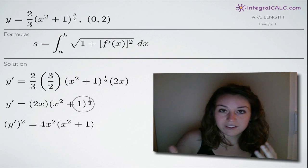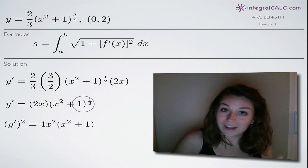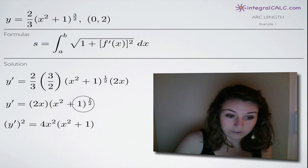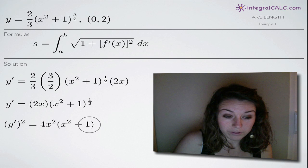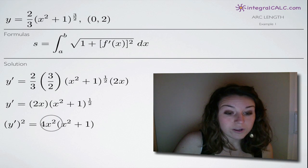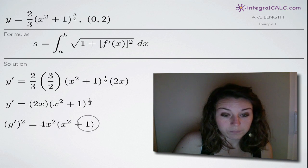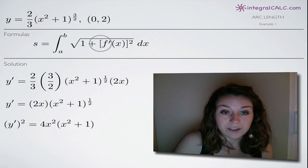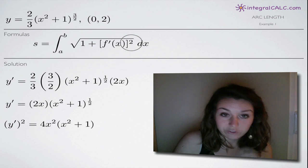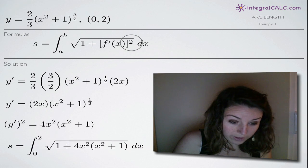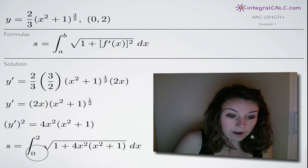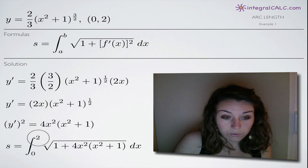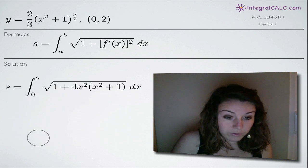So when we square it, the 2x squared, or sorry, 2x becomes 4x squared. And this x squared plus one to the one half, remember that anything raised to the one half is the square root of that thing. So this is the same thing as the square root of x squared plus one. And realize that if we square a square root, we're going to end up with that original thing that's inside the square root. So this one half just goes away and we're left with simply x squared plus one.